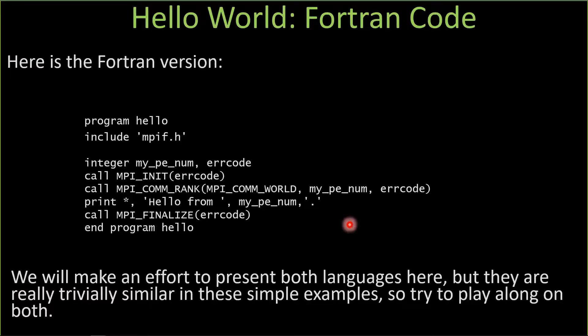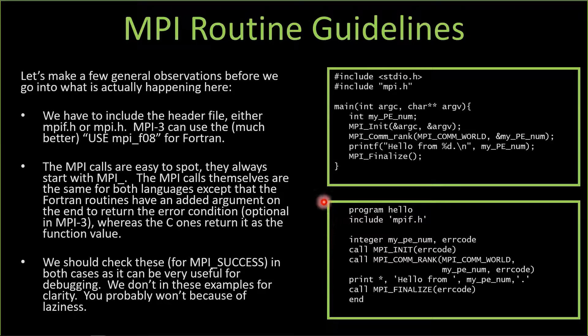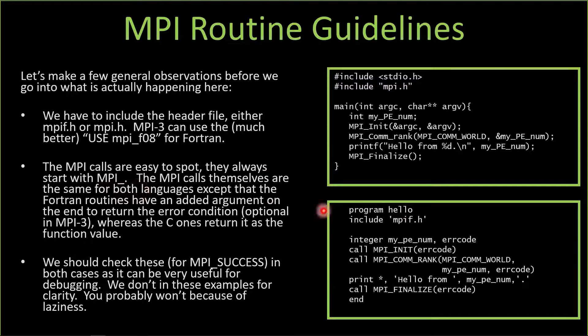Any MPI code is going to have a header file because it's a library — it's not a new language. For C it's mpi.h, for Fortran it's mpif.h. That defines everything. All the routines we'll use are easy to spot — they all start with 'MPI_'. Most MPI routines return an error condition; MPI_SUCCESS means things worked correctly. In Fortran, since routines don't return a value, the error code is the last parameter. In C you check it as the return value. Otherwise the two are exactly the same.